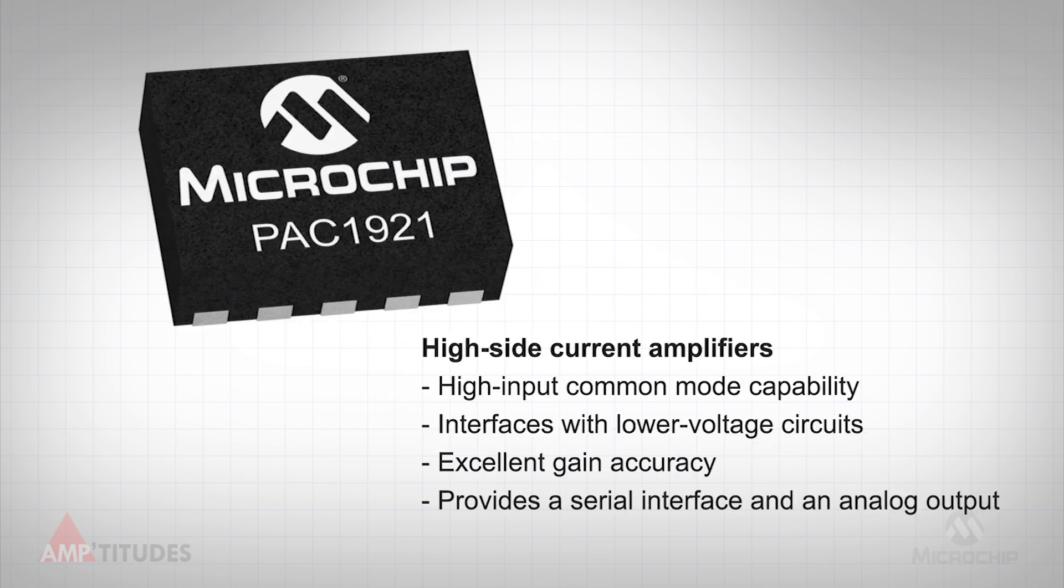Due to these limitations, amplifier manufacturers have created specialty amplifiers for high-side current sensing, such as Microchip's PAC1921.